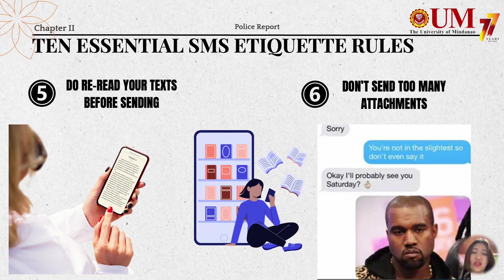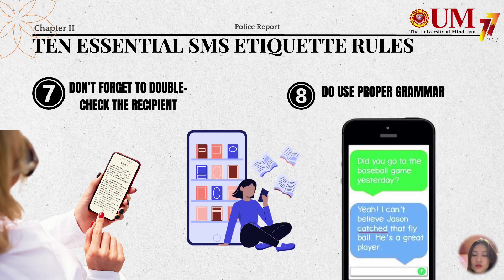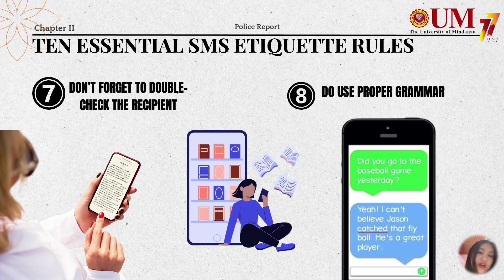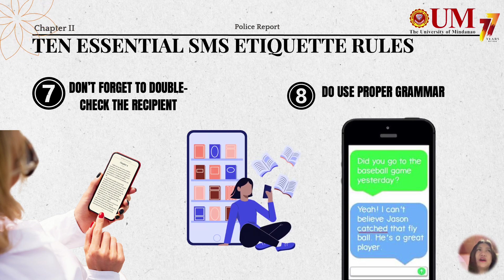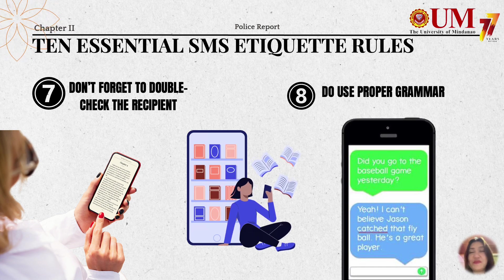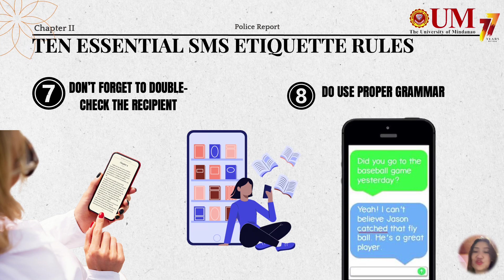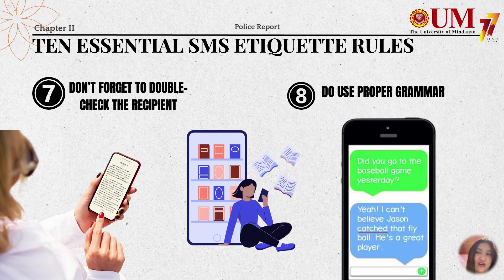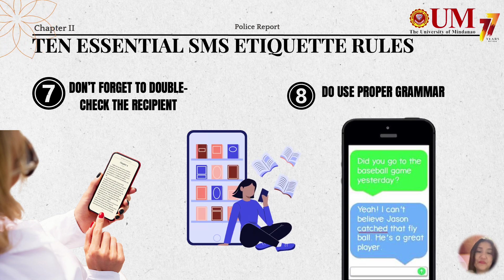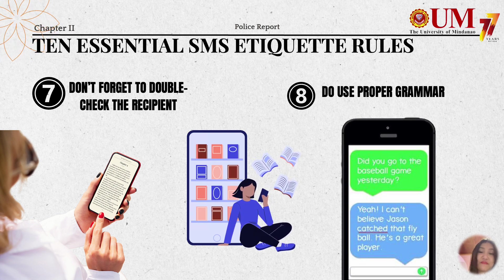The seventh SMS rule is don't forget to double-check the recipient. Sending an SMS to the wrong person would put you in an awkward situation. By double-checking the recipient, you prevent potential misunderstandings and ensure that messages are directed to the intended recipients.